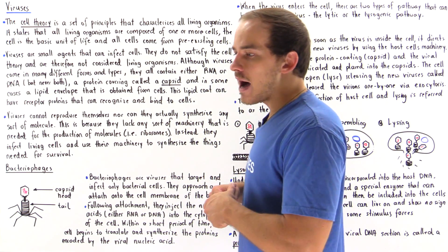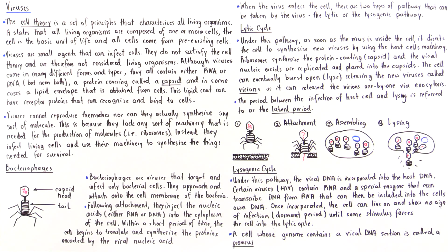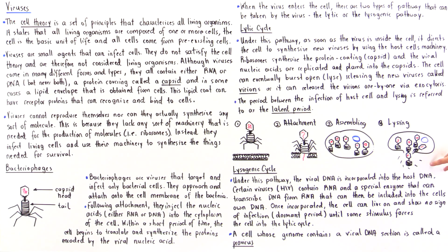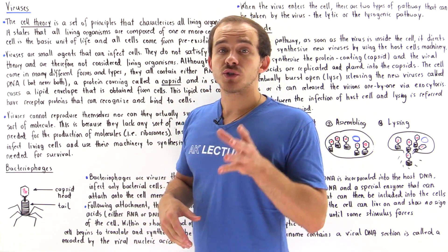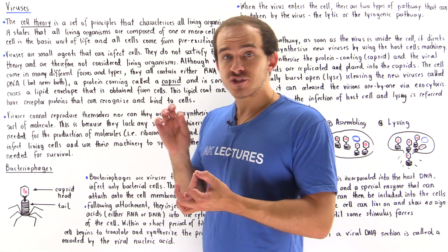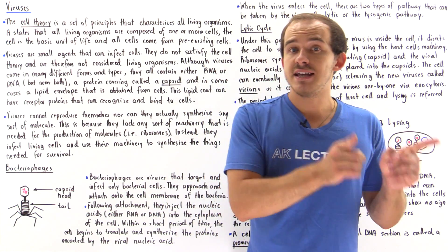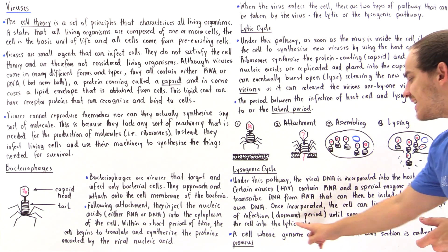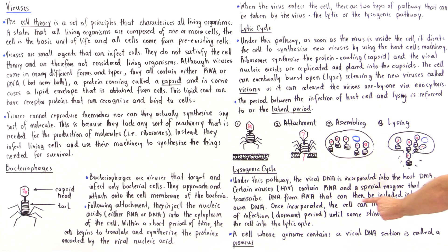A different process is the lysogenic cycle. Under this pathway, the viral DNA or RNA that enters the cell is incorporated into the host's genome — the host's DNA. Certain viruses, such as HIV, contain RNA rather than DNA, along with special enzymes known as reverse transcriptase. These enzymes reverse transcribe the RNA into DNA, which is then integrated into the host cell's genome. Once integrated, the cell can continue to live on and show no sign of actual infection. This phase is known as the dormant period.